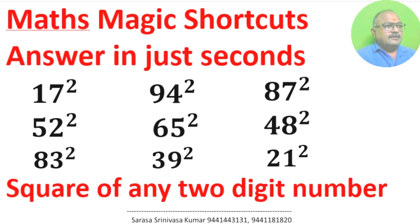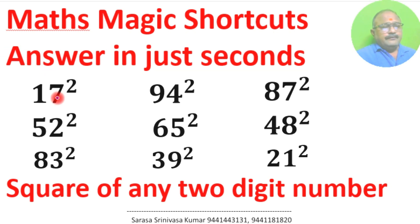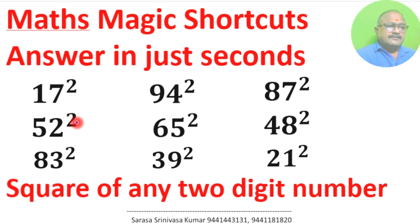Math Magic Shortcuts — answer in just seconds. Square of any two-digit number: 17 square, 52 square, 83 square, 94 square, 65 square, 39 square, 48 square, 21 square, 62 square.